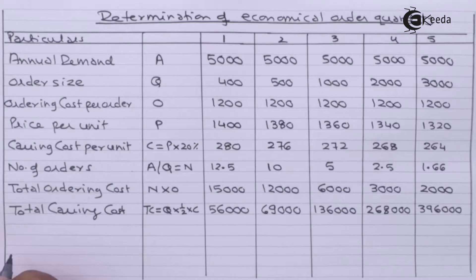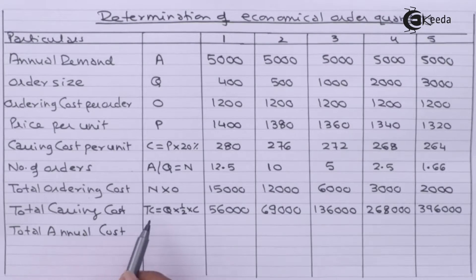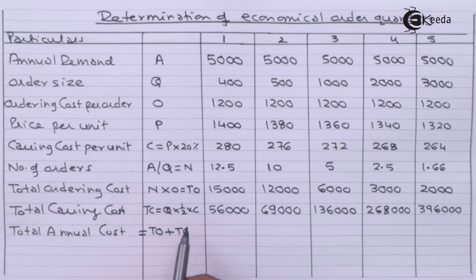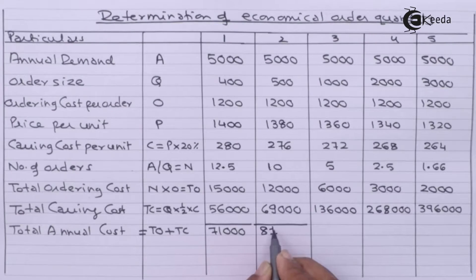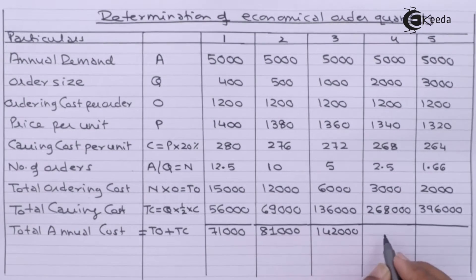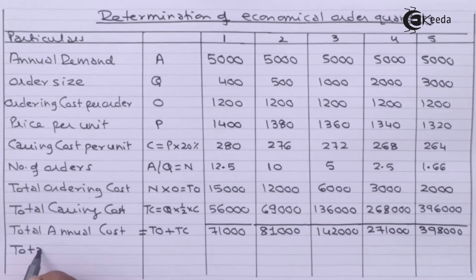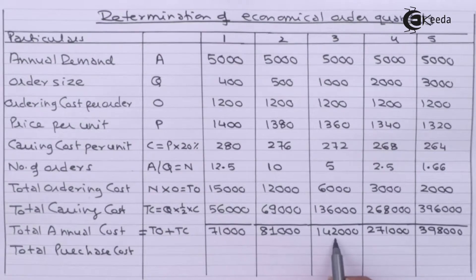We got total carrying cost of 56,000 for the first option. Total inventory cost is total ordering cost plus total carrying cost. After adding ordering cost and carrying cost: option 1 gives 71,000; option 2 gives 81,000; option 3 gives 1,42,000; option 4 gives 2,71,000; and option 5 gives 3,98,000.